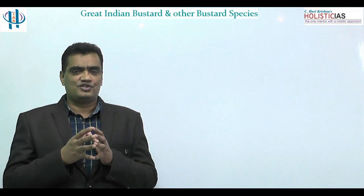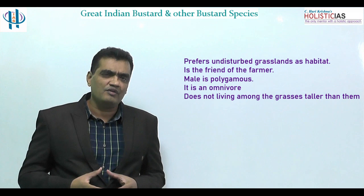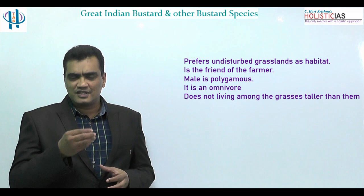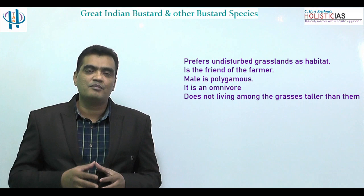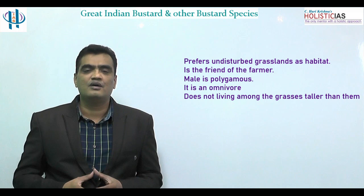The species is also being recovered under the Species Recovery Programme of the Integrated Development of Wildlife Habitats, managed by the Ministry of Environment, Forest and Climate Change. This bird prefers undisturbed grasslands; the male is polygamous and the bird is an omnivore — feeding on insects, rodents, and certain reptiles. It is called a 'friend of the farmer' because it feeds on pest insects that damage crops. It does not prefer areas where grasses are taller than itself.